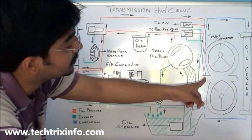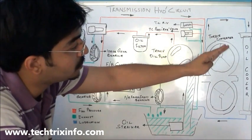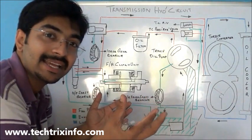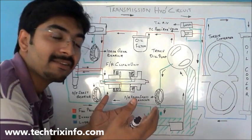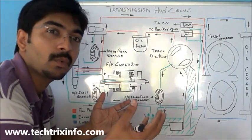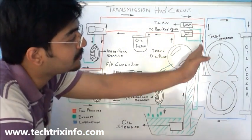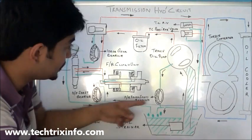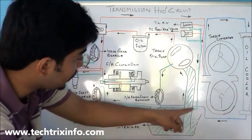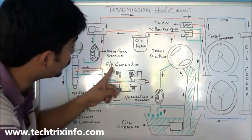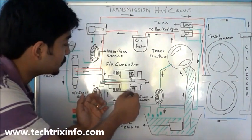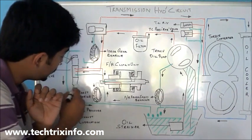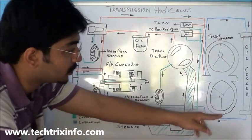The return line from the torque converter goes towards the oil cooler. It cools the transmission oil because during operation the transmission oil gets heated up. When oil gets heated up, it can change its properties and will not work properly. To avoid that, the transmission oil passes through the oil cooler. After cooling, you can see the blue line — the cooled oil comes and enters the forward reverse clutch unit for lubrication. It lubricates the forward reverse clutch unit and also the output shaft bearing, completing that circuit.